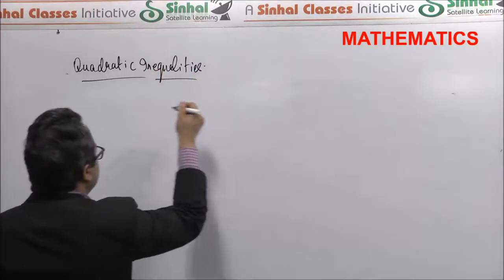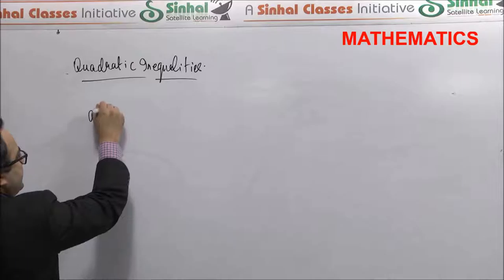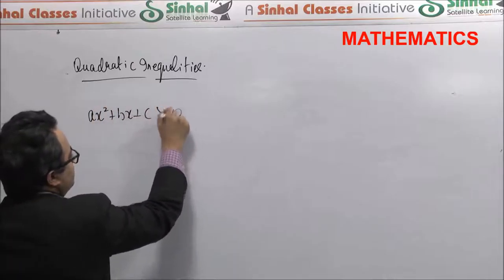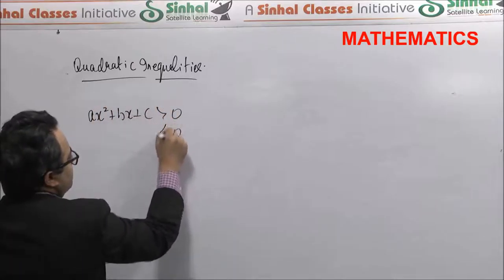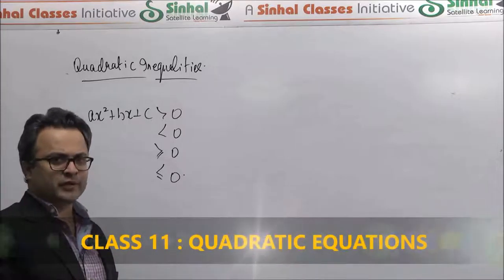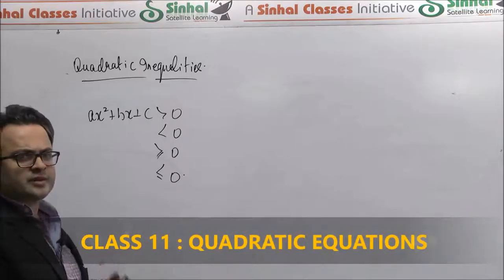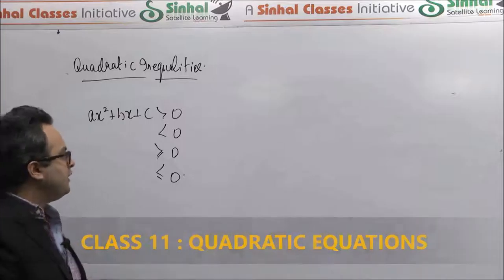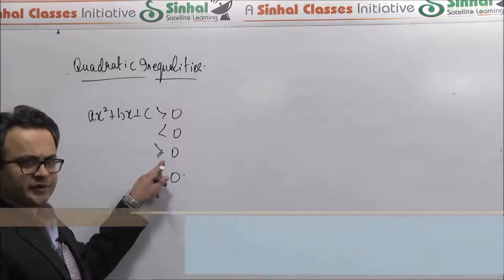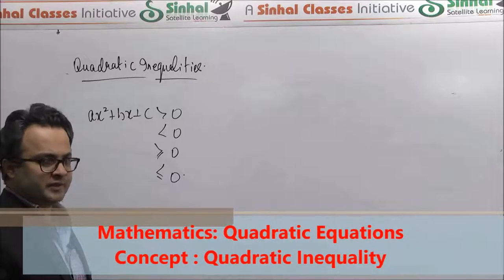What do we mean by quadratic inequality? Any inequality which is reducible to one of these four forms is a quadratic inequality. So, some quadratic expression either positive or negative, or greater than or equal to zero which is non-negative, or less than or equal to zero which is non-positive.